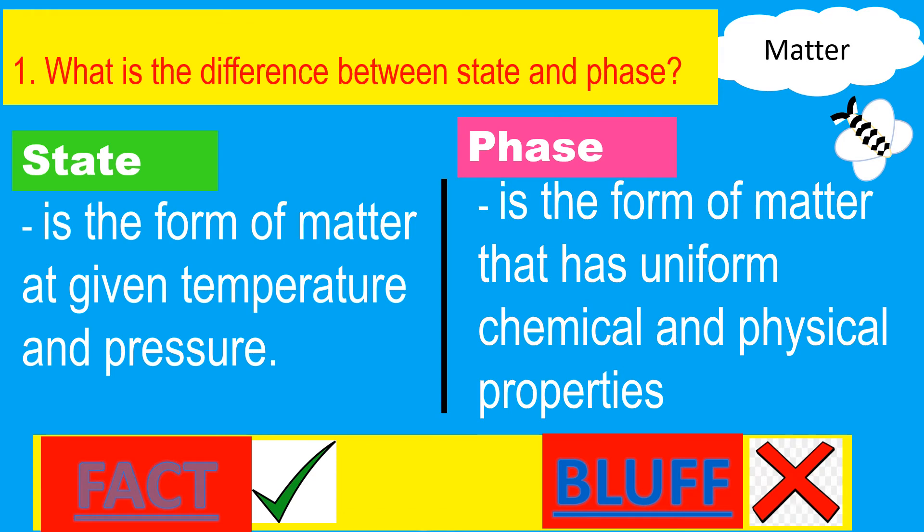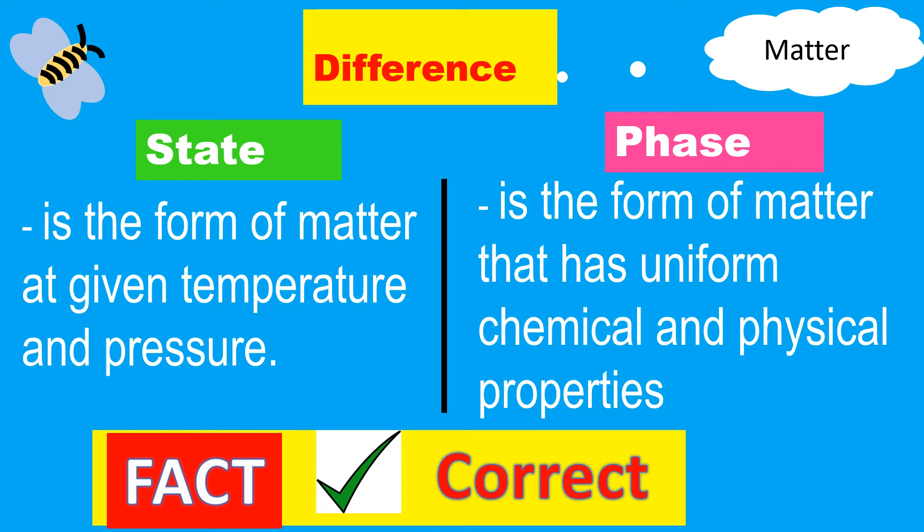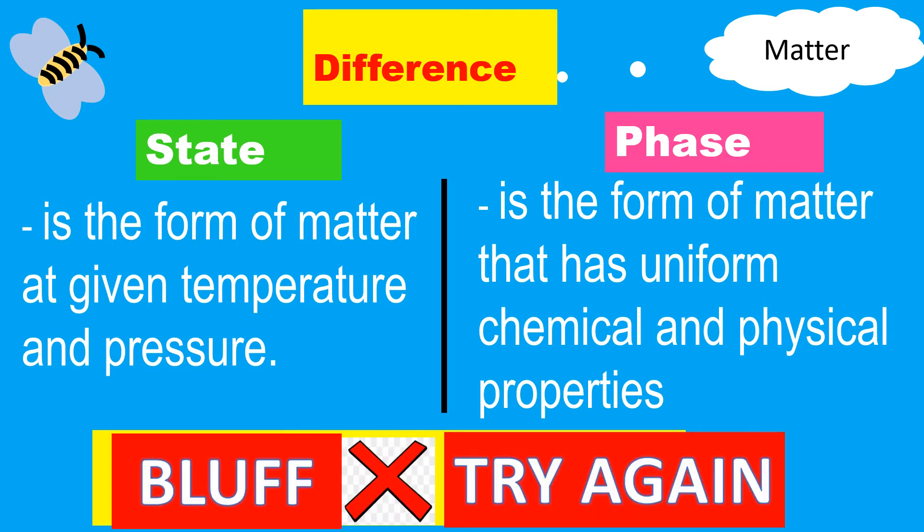Question number one: What is the difference between state and phase? State is a form of matter at a given temperature and pressure, while phase is the form of matter that has uniform chemical and physical properties. Answer right now. If your answer is fact, then you're correct. Congratulations. If your answer is bluff, then try again.